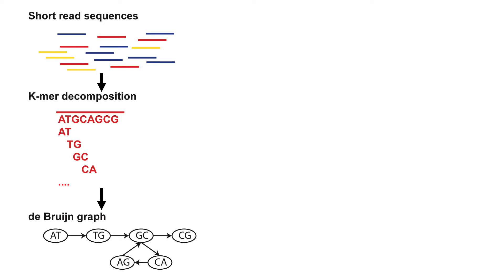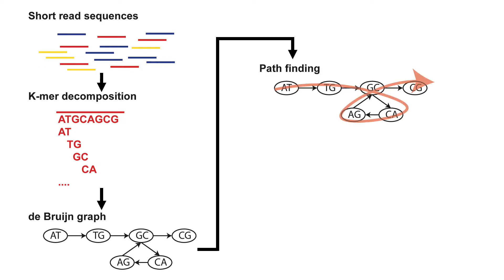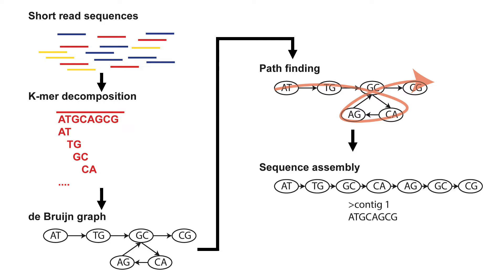The most common use of a de Bruijn graph is for sequence assembly, where a pass through the de Bruijn graph can be identified and then used to assemble longer sequences that represent the original content of the genomes in the sample. These assembled sequences can then be analyzed in a variety of ways, providing information about what organisms are present in a community and what genes they have. This has been instrumental in the wider application of short read sequencing technology due to how efficient and scalable the de Bruijn graph data structure is.